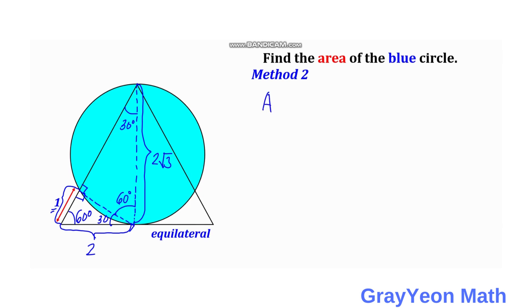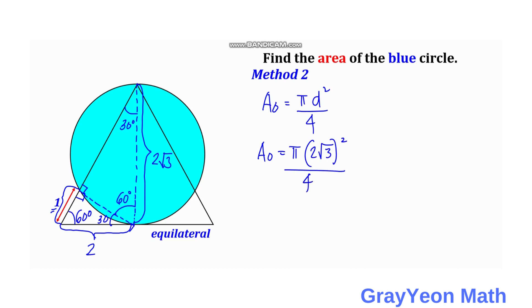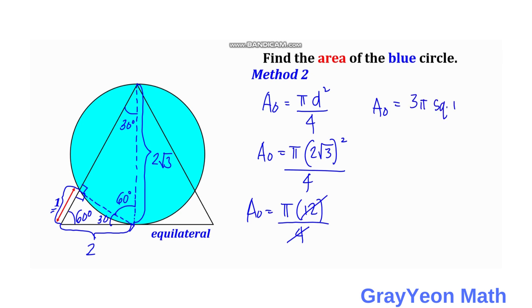Since the side opposite the 30-degree angle is 1, to get the hypotenuse you multiply by 2, giving 2 units. Then to get the diameter, multiply by √3, giving 2√3. So the area of the circle is equal to π times d squared over 4, which equals π times (2√3) squared over 4, giving 12 over 4. The area of the circle is again 3π square units — the same answer as the first method.